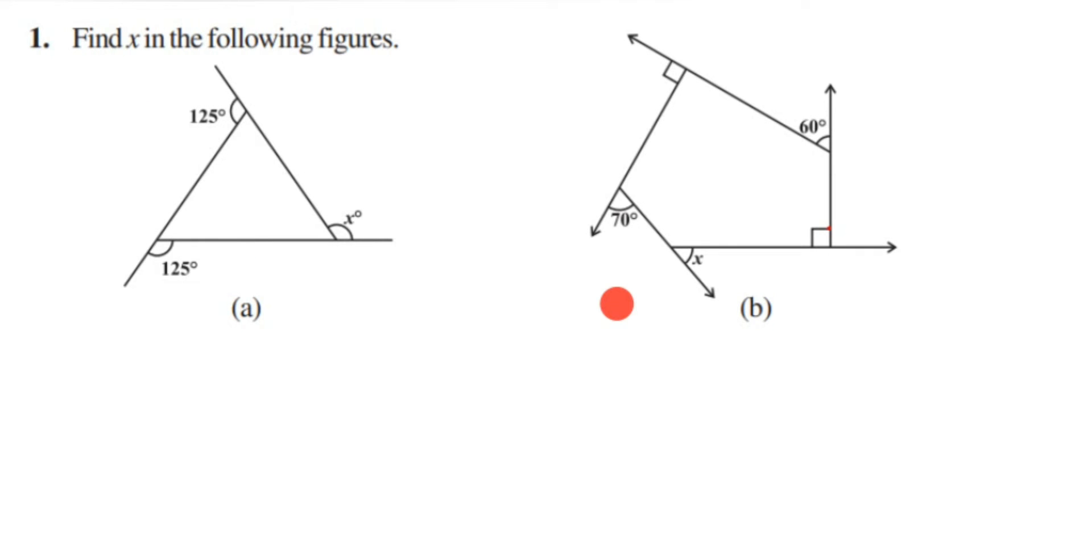Now if you observe the figures, they have given external angles here. This is a triangle and they have given exterior angles of three different angles which are exterior. And to find out this, we will not going to find out the interior angle. Now since we have given the exterior angle, we are going to use this property.